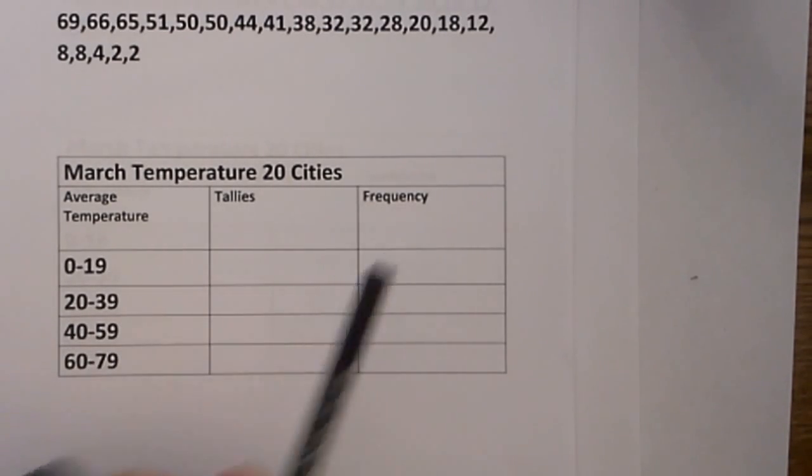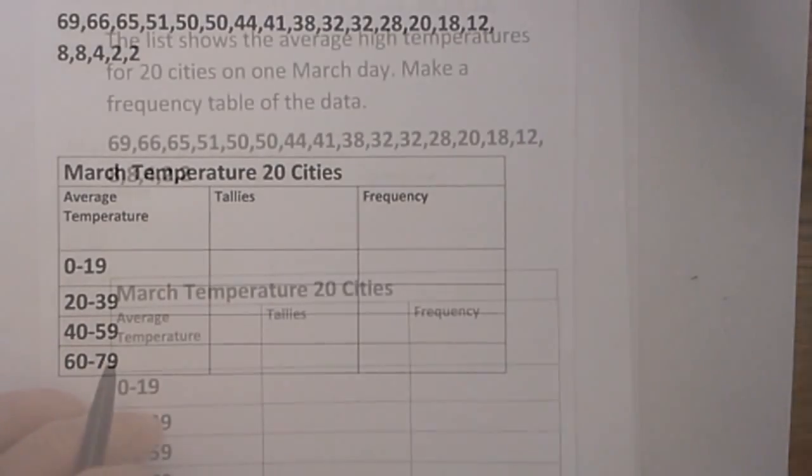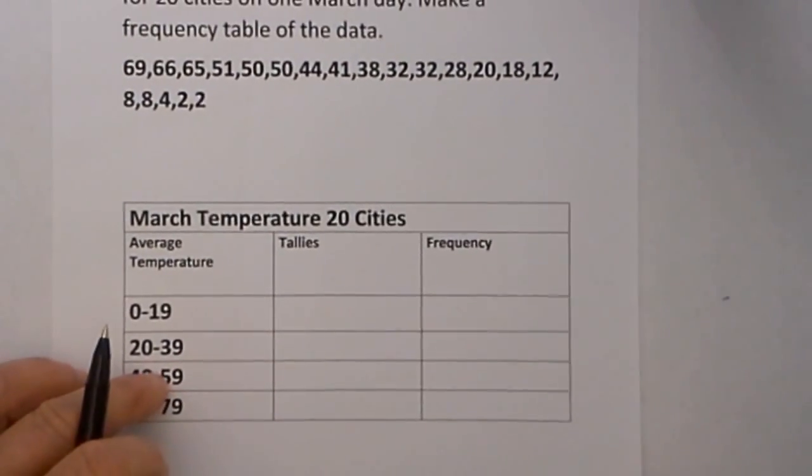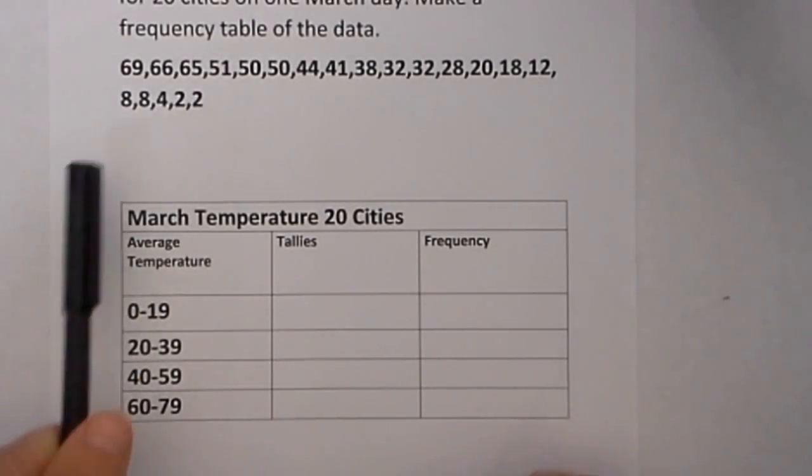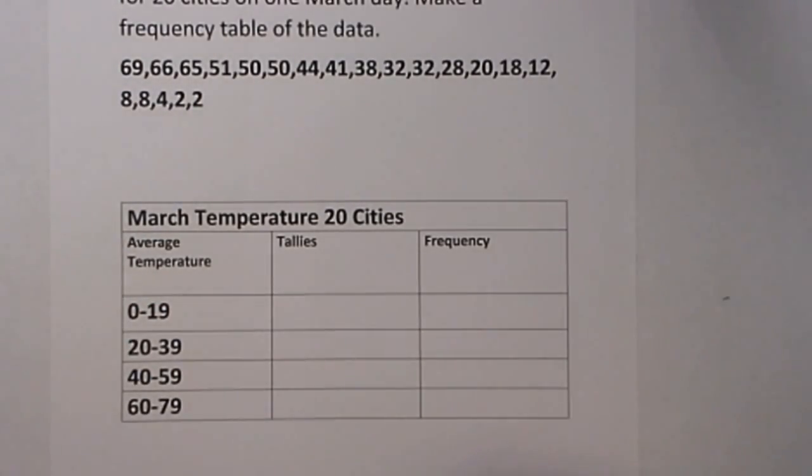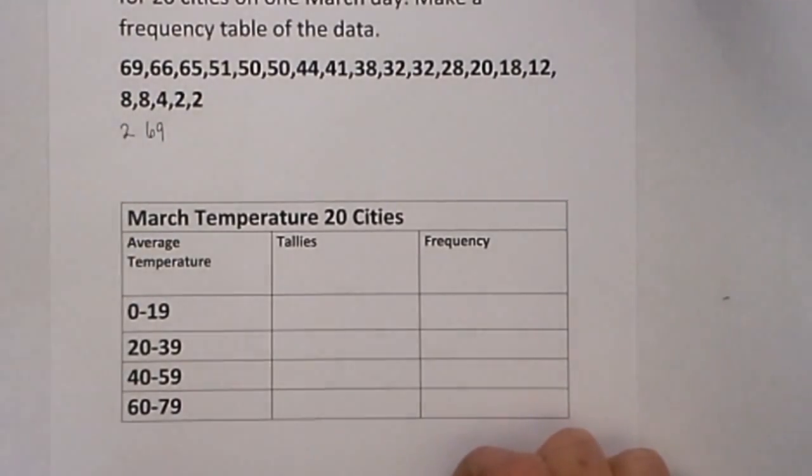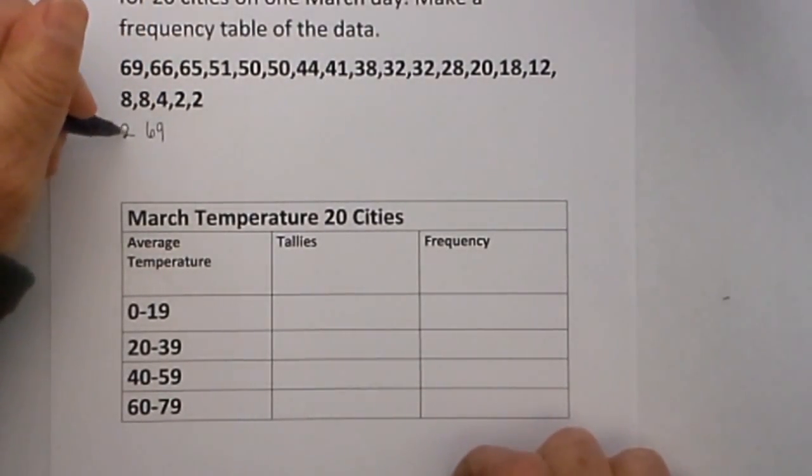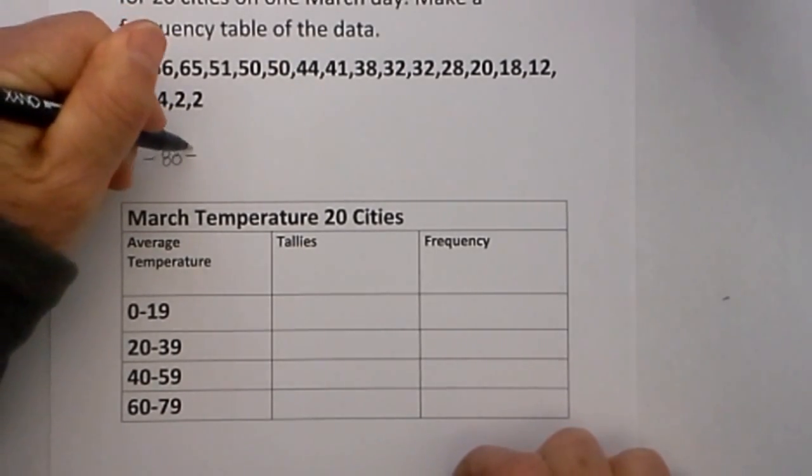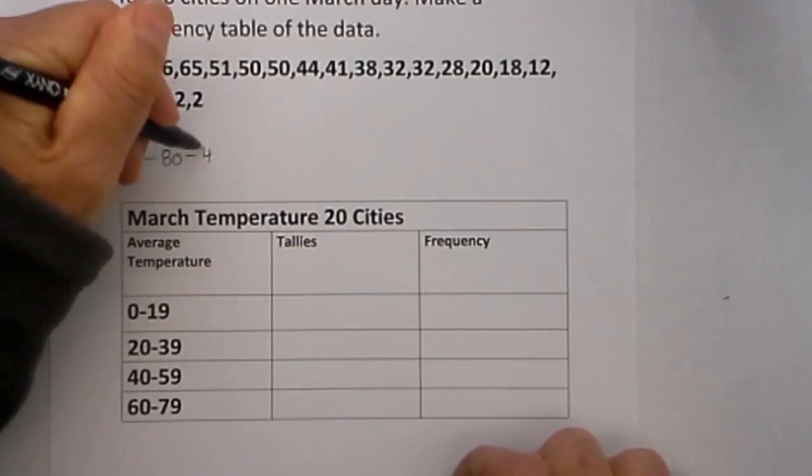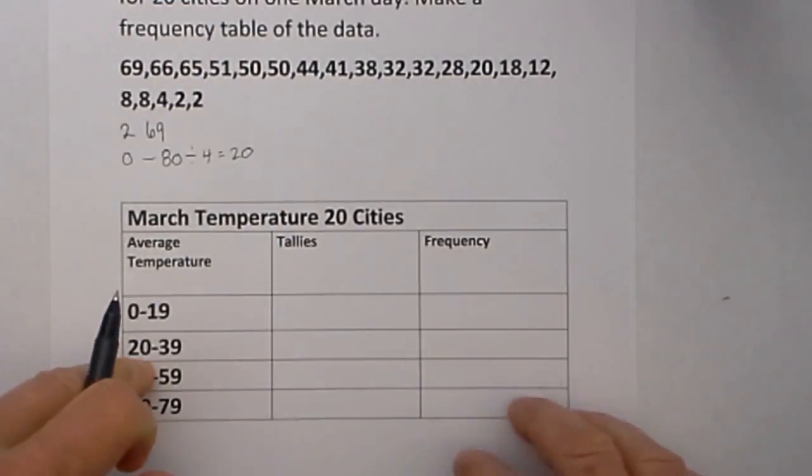So each frequency table in some way needs those ingredients. Now the data is conveniently set in descending order. Step 1 is to determine your intervals. Let's start with the low so we get the range between the low of 2 and the high of 69. I know that I want 4 intervals so I will round the 2 to 0 and the 69 to 80 because that is a nice number and I know 80 divided by 4 equals 20.